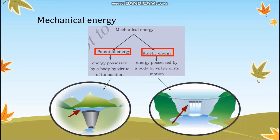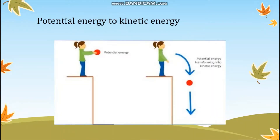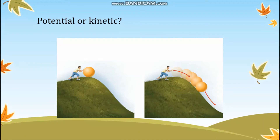Another example for conversion of potential energy to kinetic energy is shown here. You can see a girl holding a ball and standing on a high place. Because she is standing at a high place, the ball now has potential energy — that is, if allowed, the ball will undergo motion. As soon as the ball is let go, the potential energy is transformed into kinetic energy during its downward motion.